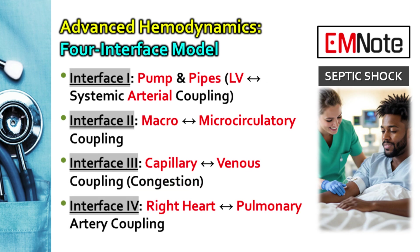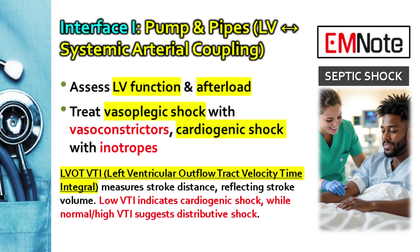For more advanced physiology, the four-interface model uses bedside tools to find the weakest link in circulation and personalize resuscitation. Interface one is pump and pipes — the basic macrohemodynamics. We look at left ventricular ejection fraction with ultrasound, but even more useful is the LVOT VTI — the left ventricular outflow tract velocity time integral — a proxy for stroke volume. A normal VTI is usually above 18 cm. A warm, vasodilated, hypotensive patient with good LVEF and high VTI has pure vasoplegia needing vasoconstrictors. A cold, clammy patient with low LVEF and low VTI points toward a cardiogenic component needing inotropes like epinephrine or dobutamine.